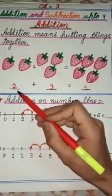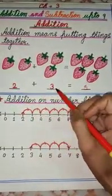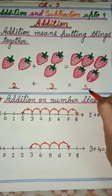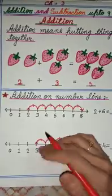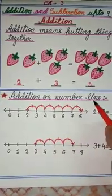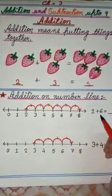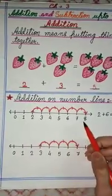We can say this 2 plus 3 equals 5. Now children, we will learn addition on number line. We will learn how to add numbers using a number line.